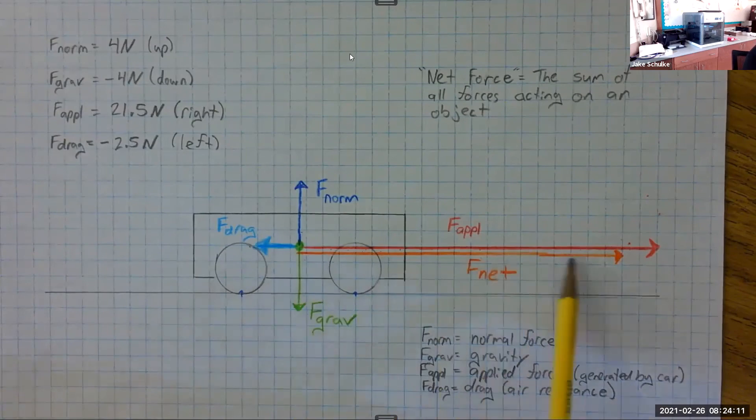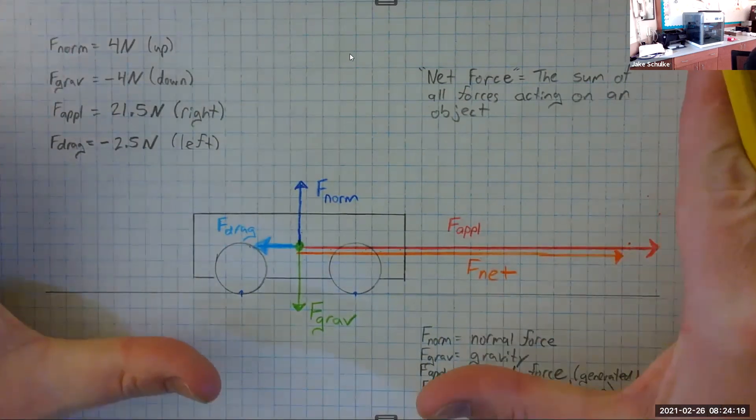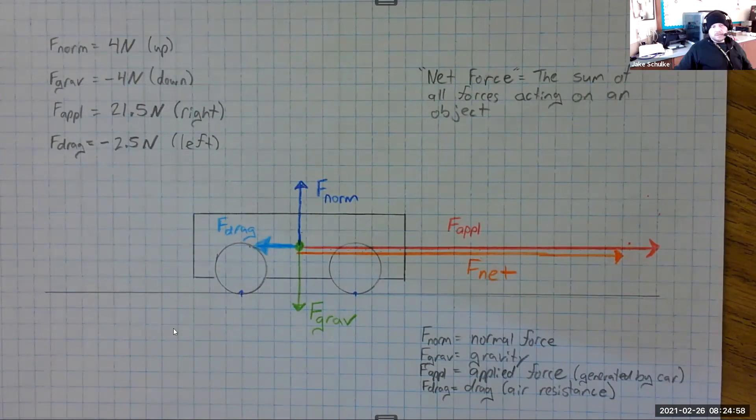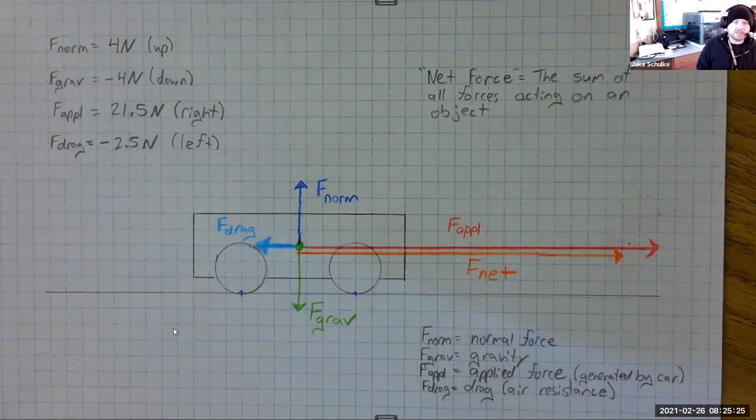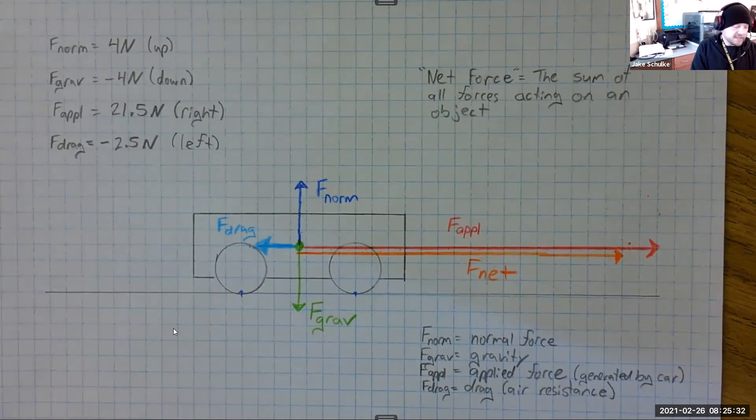Because what does the net force tell us? What does this mean? Because I know the net force is to the right. What's going to happen at this moment in time? Like on this diagram, time is frozen. But what happens if I press play and let this car do whatever it's going to do? What is the car going to do? Exactly. It's going to start moving. And in which direction is it going to start moving? To the right. Precisely. And we know that because that's the direction of the net force. It's going to accelerate to the right. That's what the net force tells us. In which direction is this thing going to accelerate? And it even tells us how fast is it going to accelerate. But that involves math to figure out how fast.